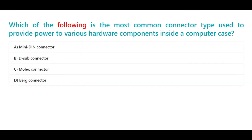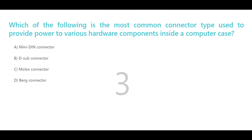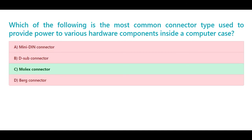Which of the following is the most common connector type used to provide power to various hardware components inside a computer case? A. Mini DIN connector. B. D-sub connector. C. Molex connector. D. Berg connector. The correct answer is C. Molex connector.